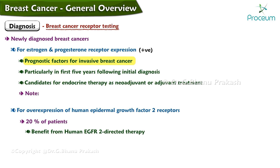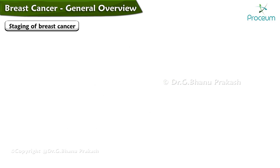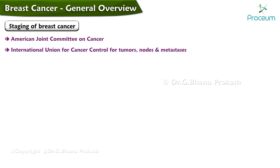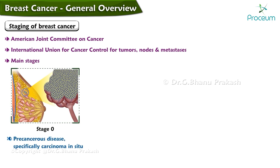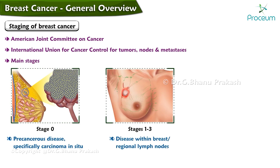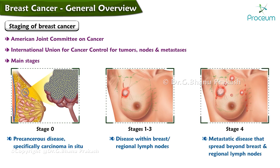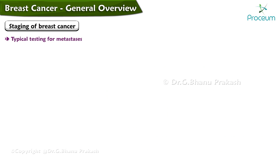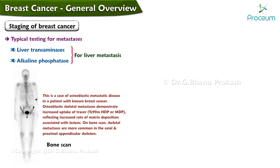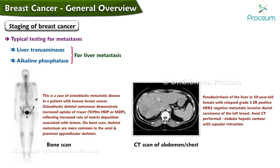Hormone receptor-positive cancers — estrogen receptor and progesterone receptor positive — comprise the majority of cases at 80 percent. Breast cancer is classified according to the AJCC and the International Union for Cancer Control TNM staging system. Stage 0 is precancerous disease, specifically carcinoma in situ. Stages 1 to 3 indicate disease within the breast or regional lymph nodes. Stage 4 is metastatic disease. Testing for metastases includes liver transaminases, alkaline phosphatase for liver metastasis, and bone scan.